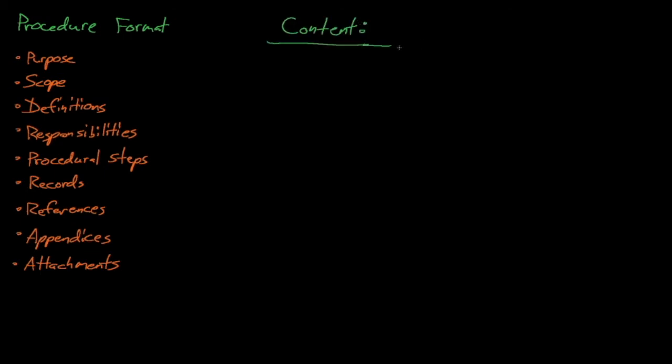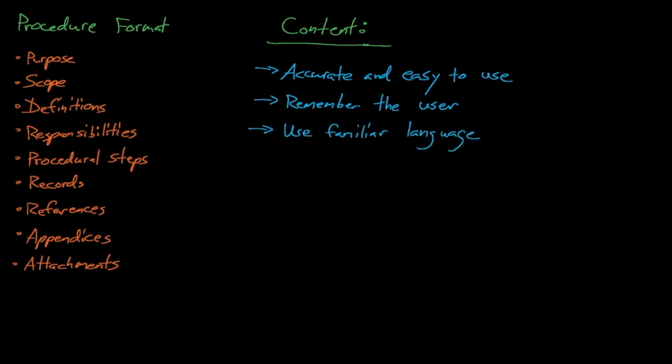The content of the procedure should be accurate and easy to use, and we should always remember who's going to be using the procedure. We'll want to try and get inside of operations' heads when writing procedures. So what steps need to be emphasized? What steps might they be tempted to skip? Is the procedure too technical for the operator to understand? Or do we use straightforward language and terminology so that there is no confusion whatsoever? We'll want to design procedures for the least qualified user, so keeping things approachable and straightforward is our goal.